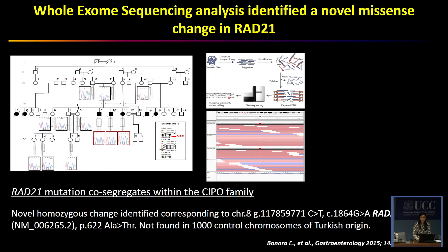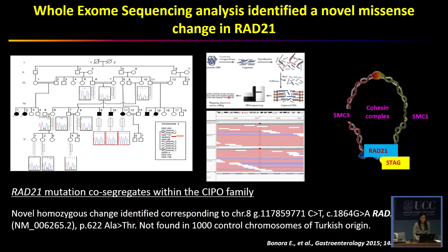Briefly, RAD21 is a part of the cohesin complex — this ring in the picture — that is linked to SMC3, SMC1, and STAG subunits, and is important for sister chromatid pairing and unpairing.